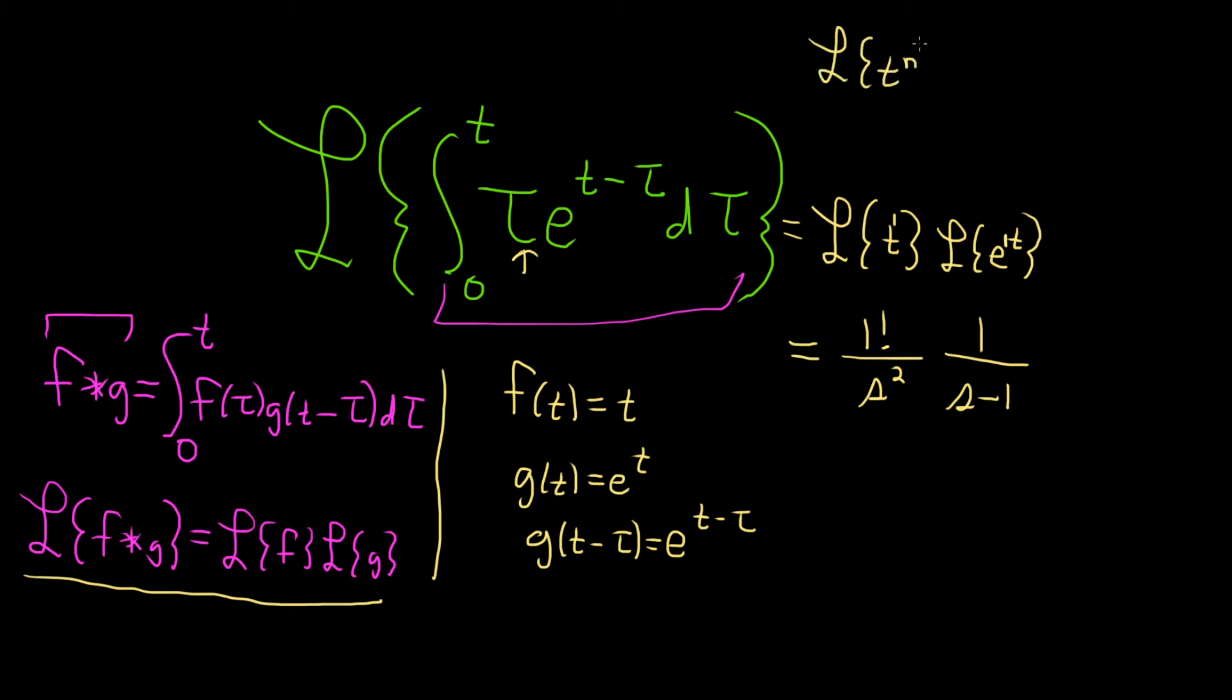the Laplace of t to the n, the formula we used, it's n factorial, and then it's 1 higher on the bottom. And the Laplace of e to the at is 1 over s minus a. So a here was 1.